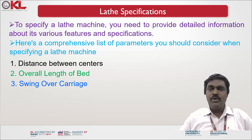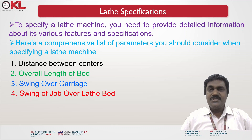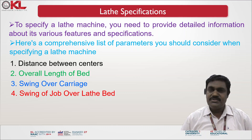The third parameter is swing over carriage — the maximum diameter of the workpiece that can rotate over the carriage. You should provide some clearance gap to accommodate workpieces rotating over the carriage. Then there is the swing of the job over the lathe bed — the maximum diameter of the workpiece that can fit and rotate over the lathe bed.